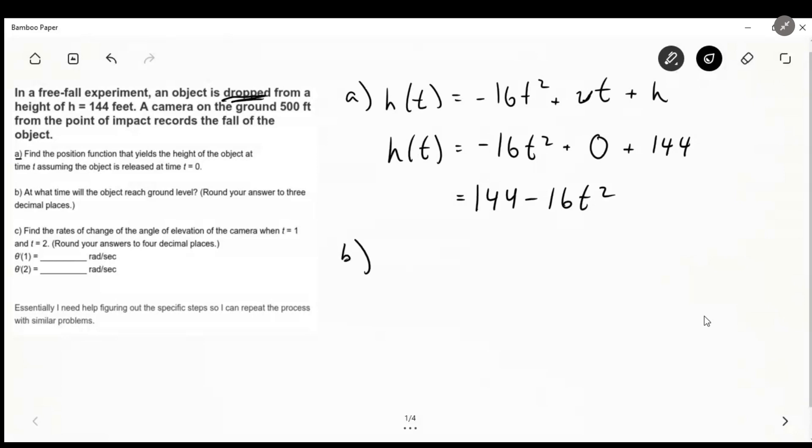So part B, at what time will the object reach the ground? You could think about you have an object, it's falling, it's starting at 144 feet. Where's the ground? It's at zero feet.